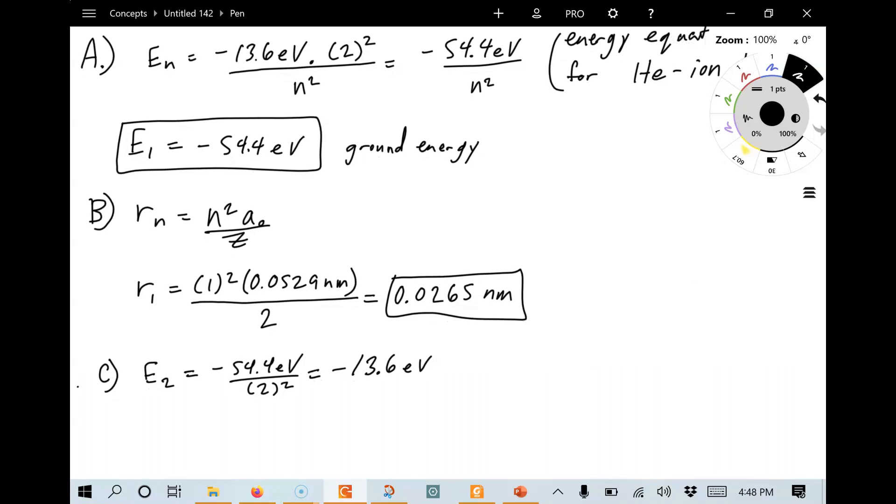To get the photon energy, hf, we just go ahead and take the higher state, E2. We subtract the lower state, E1. That's a negative 13.6 eV minus a negative 54.4 eV, which comes out to a value, hf is equal to 40.8 electron volts. So there's your energy.